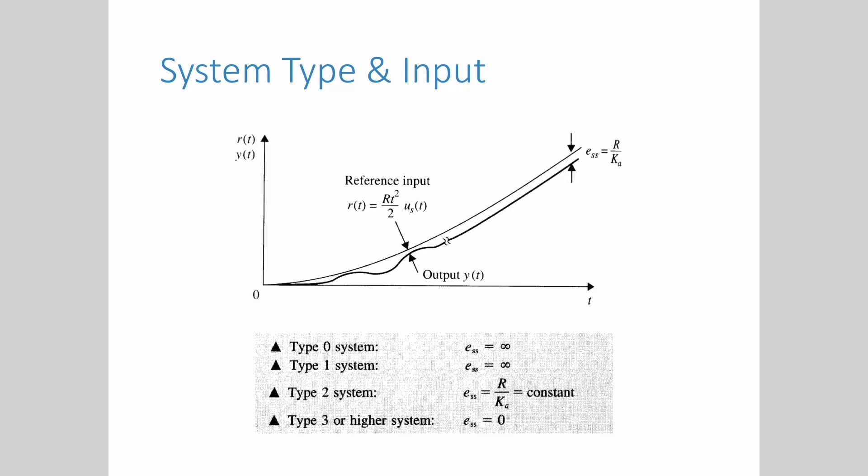For the system with type 0 and 1 will have infinity steady state error if the input to the system is parabolic input. Type 2 will yield constant steady state error at r over Ka. That is, the curve of the output will follow the shape of the input curve at constant distance as time approaches infinity. And finally steady state error for a system with type 3 or higher is 0.